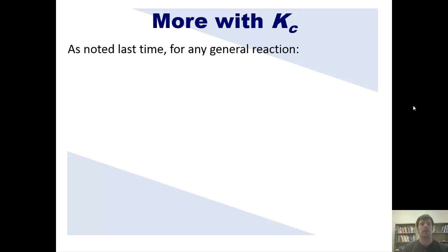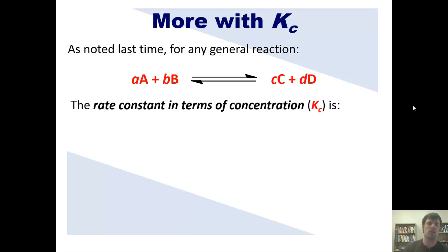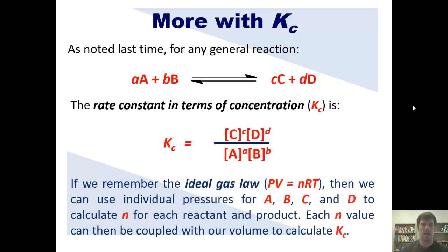With that said, let's return to Kc. Now, as we just got done explaining, for any general reaction with this formula or anything like it, the rate constant in terms of concentration, or Kc, is this, when that reaction reaches equilibrium. Now, if we remember the ideal gas law, to which I'll link right here, then we can use individual pressures for A, B, C, and D to calculate N, the number of moles, for each reactant and component at equilibrium. Each N value can then be coupled with our volume to calculate Kc.